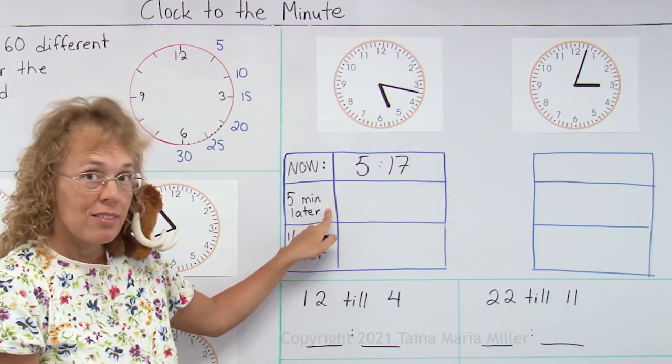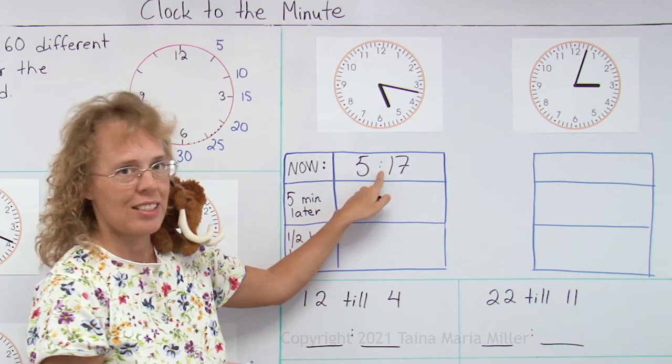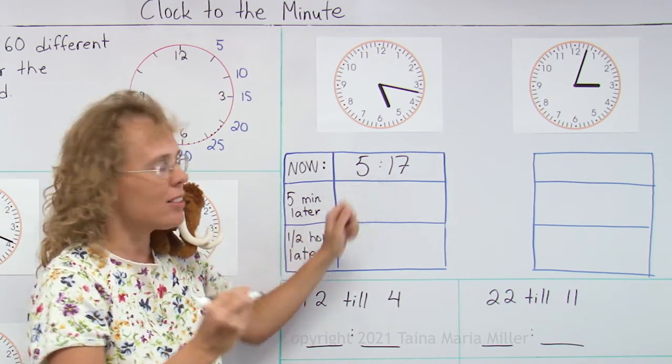Now 5 minutes later, that's easy, all you do is add to 17. 17 plus 5 is 22.